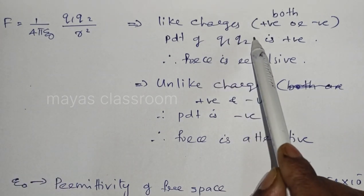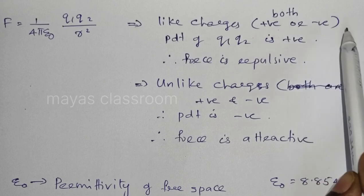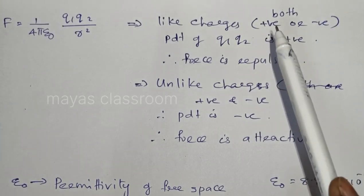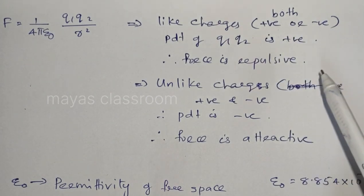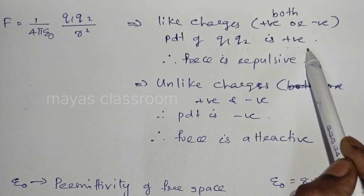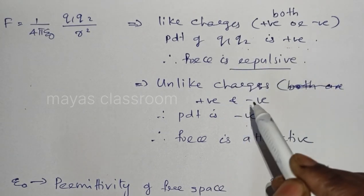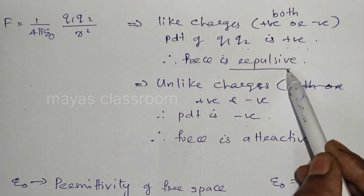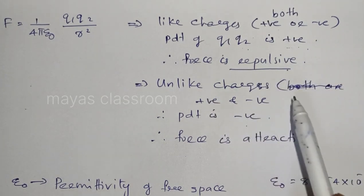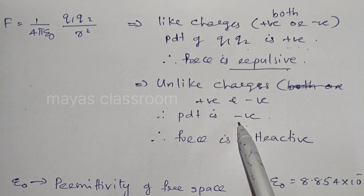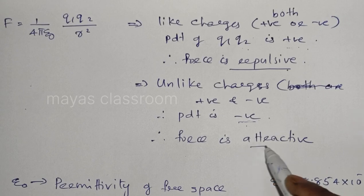The charges can be positive or negative. If Q1 is positive and Q2 is positive, or Q1 is negative and Q2 is negative, the product is positive, and then the force is a repulsive force. For unlike charges — one positive and one negative — the product is negative, so the force is attractive.